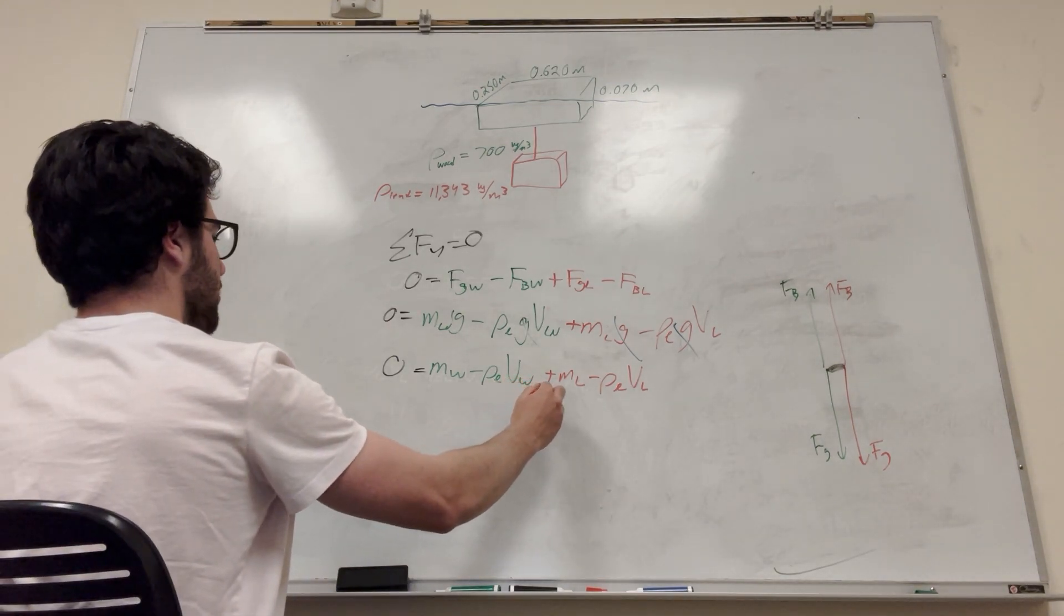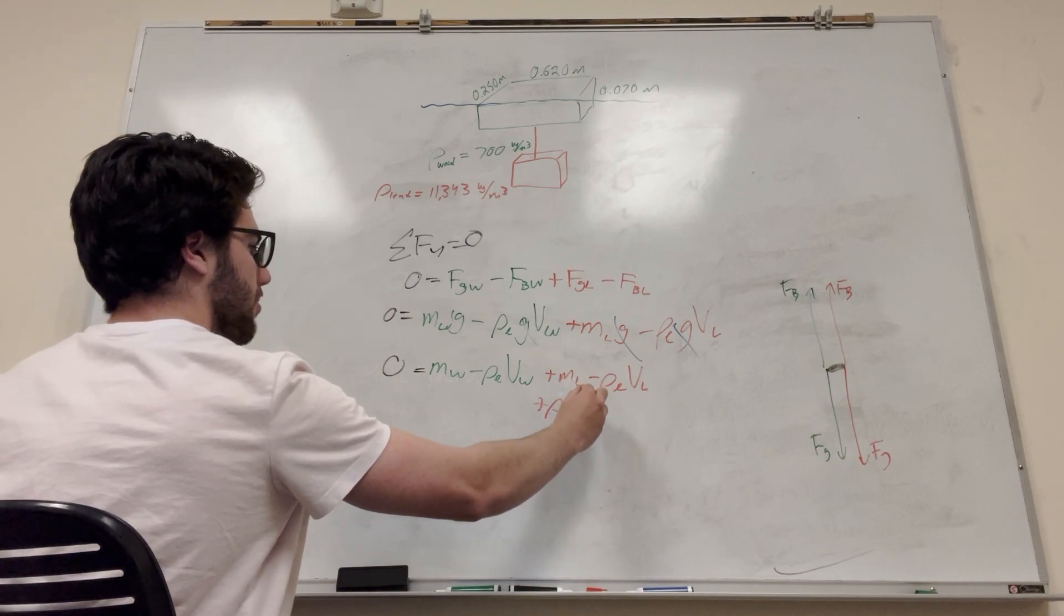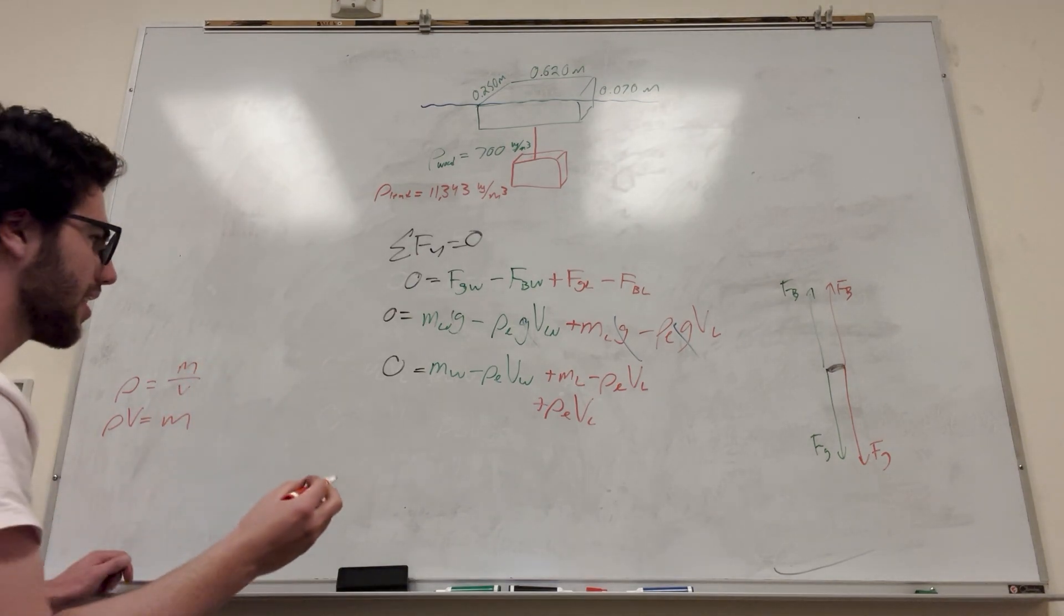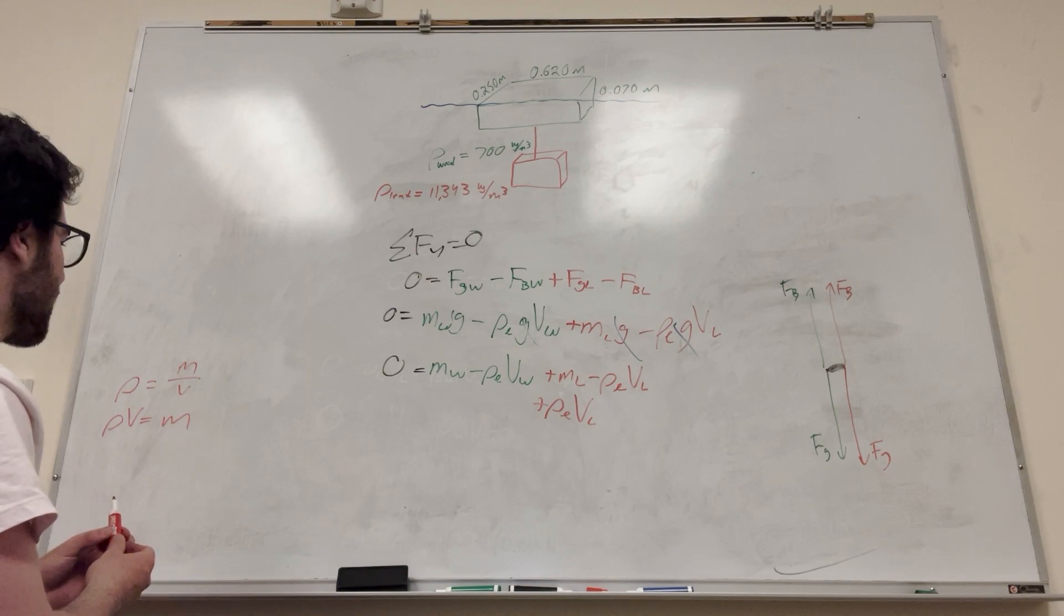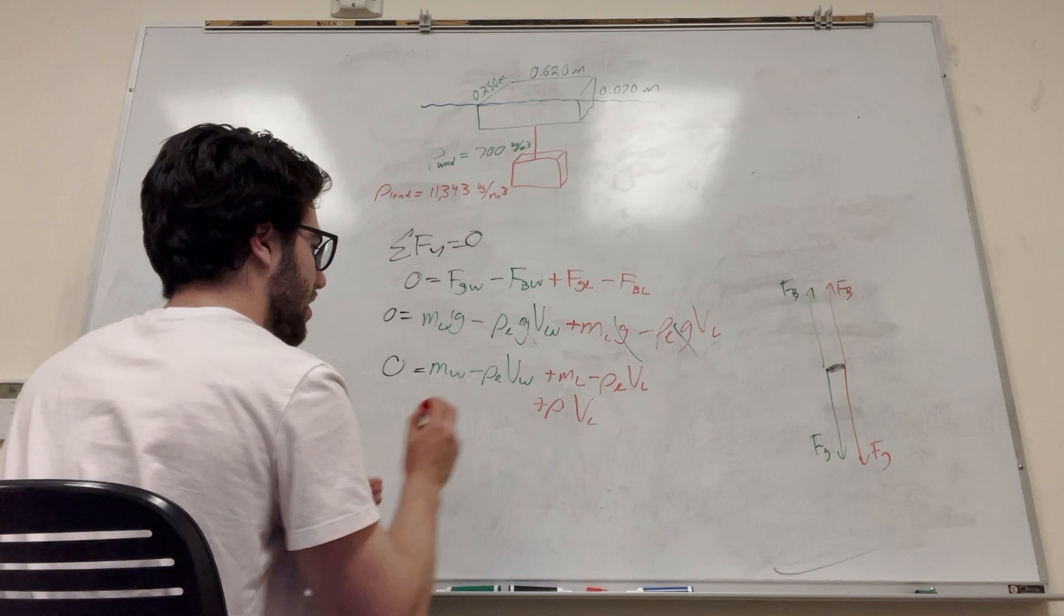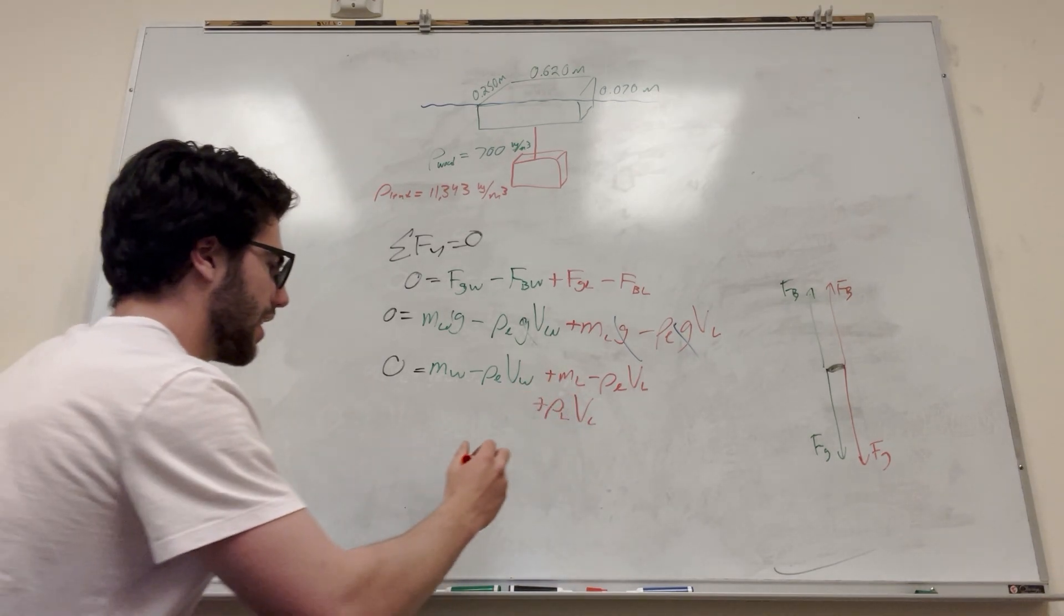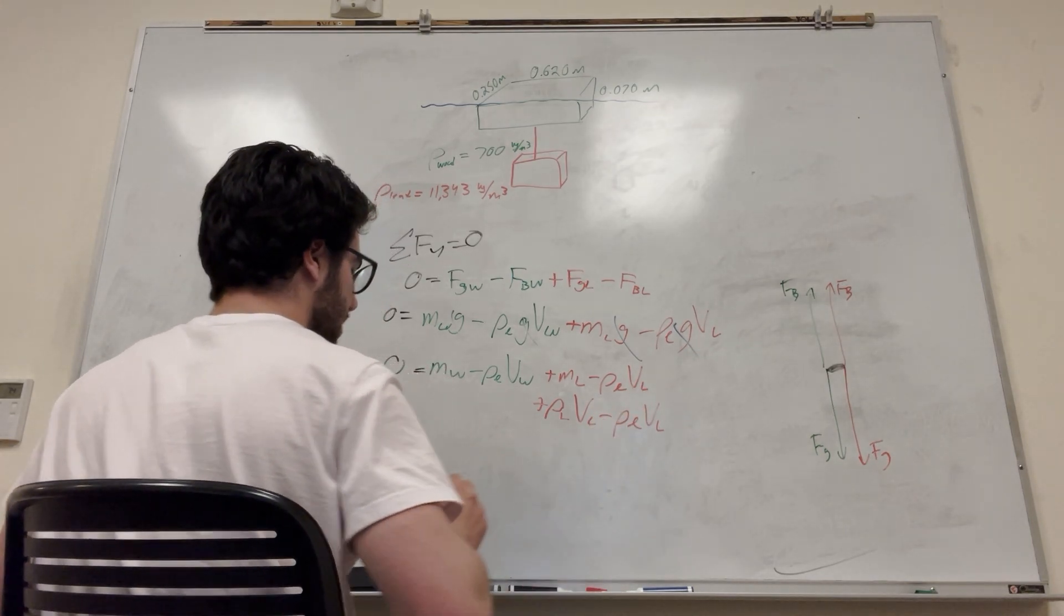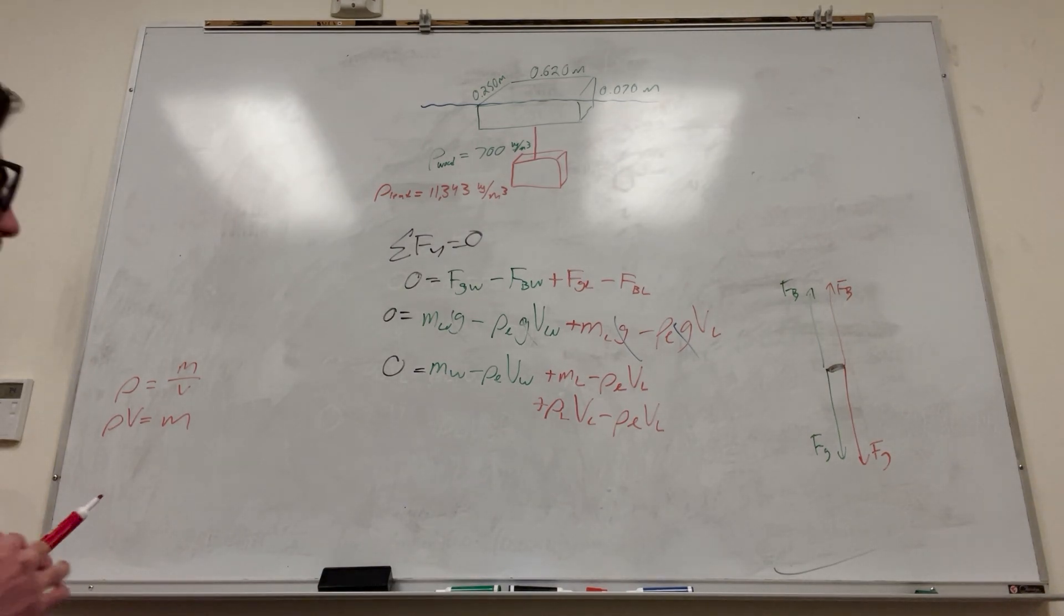So this is going to become density of the liquid times the volume of the lead. Hold on, what am I thinking? What am I doing? Oh, no, that's the density of the lead, not the density of the liquid. So density of lead. And then of course this is going to stay the same. Let's see the liquid, volume, liquid, or volume of lead. All right, and then we go to this side.